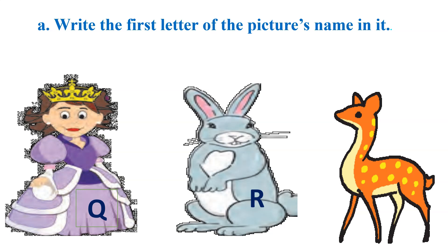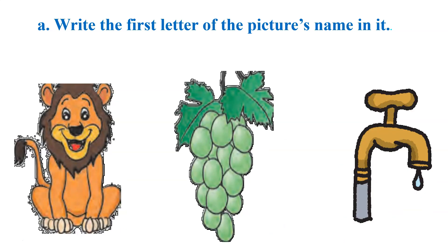Next picture is deer — D, D, deer. So the first letter of this picture will be D. Isn't it so easy? If you know all the sounds you can solve this activity easily. Lion — L, lion. That's why the first letter of lion is L. Next picture is crabs — G, G, crabs. Letter G has sound G.